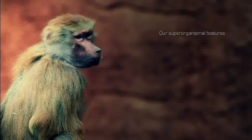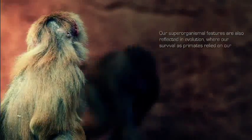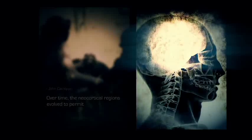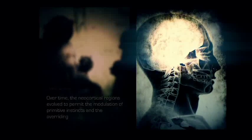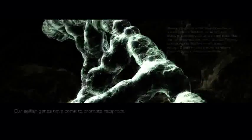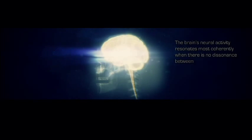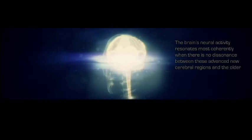Our superorganismal features are also reflected in evolution, where our survival as primates relied on our collective abilities. Over time, the neocortical regions evolved to permit the modulation of primitive instincts and the overriding of hedonistic impulses for the benefit of the group. Our selfish genes have come to promote reciprocal social behaviors in superorganismal structures, effectively discarding the notion of survival of the fittest. The brain's neural activity resonates most coherently when there is no dissonance between these advanced new cerebral regions and the older, more primitive ones.